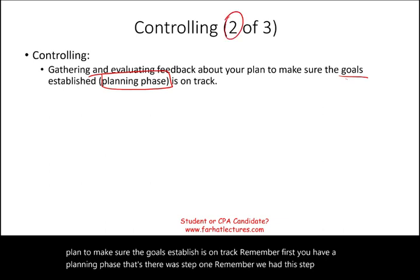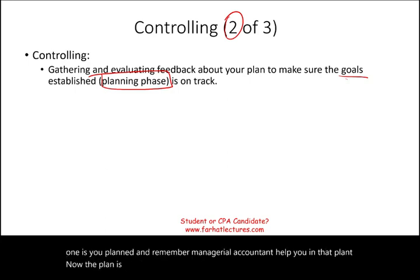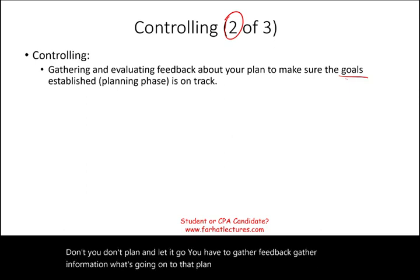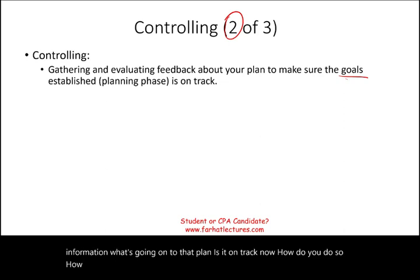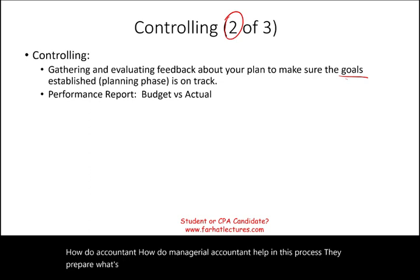You don't plan and let it go — you have to gather feedback and information. Is the plan on track? Managerial accountants help by preparing what's called a performance report. One example of a performance report is something called budget versus actual. There are also many variance reports we'll talk about later when we discuss standard costing — for example, material variances, labor variances, and overhead variances.